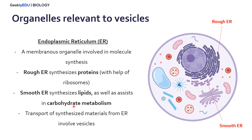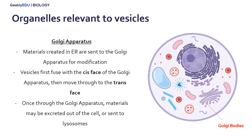These organelles are really important with regards to vesicles, as they're synthesizing these molecules. Once they're synthesized, they have to be transported, which requires forming multiple vesicles. The next really important organelle with regards to vesicles is the Golgi apparatus, which takes the materials created in the ER and further modifies them before they're actually ready for their function.